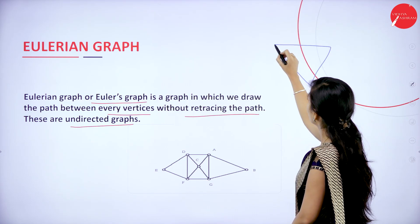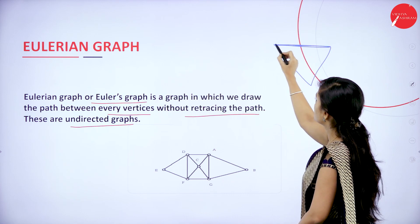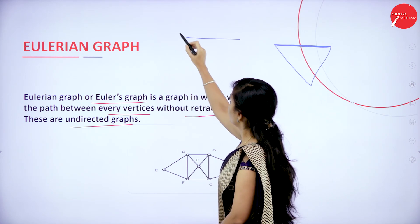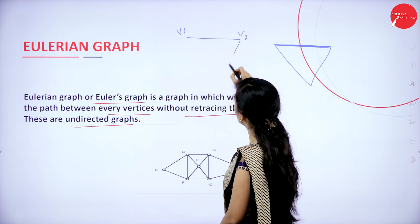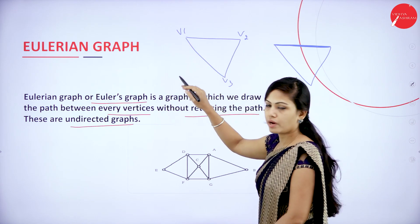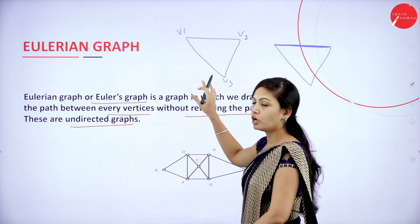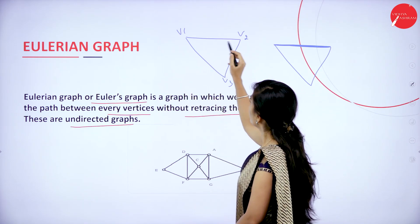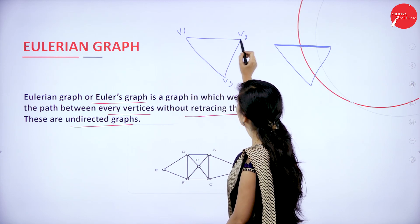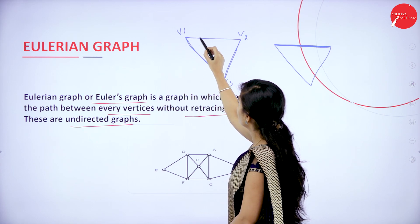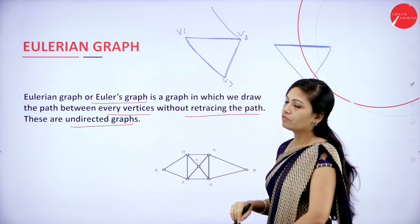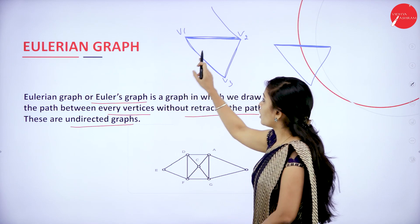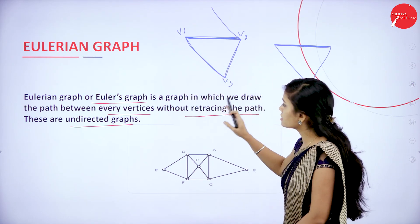Without retracing the graph is called an Eulerian graph. I will write an example. Without retracing means this path is called without retracing, because already I have drawn from V1 to V2, V2 to V3, and V3 to V1. This is an example for Euler's graph. But if you draw V1 to V2 and V2 to V4 again, this is not a Euler's graph because that edge has been repeated twice. Without retracing the path is called as Eulerian graph.